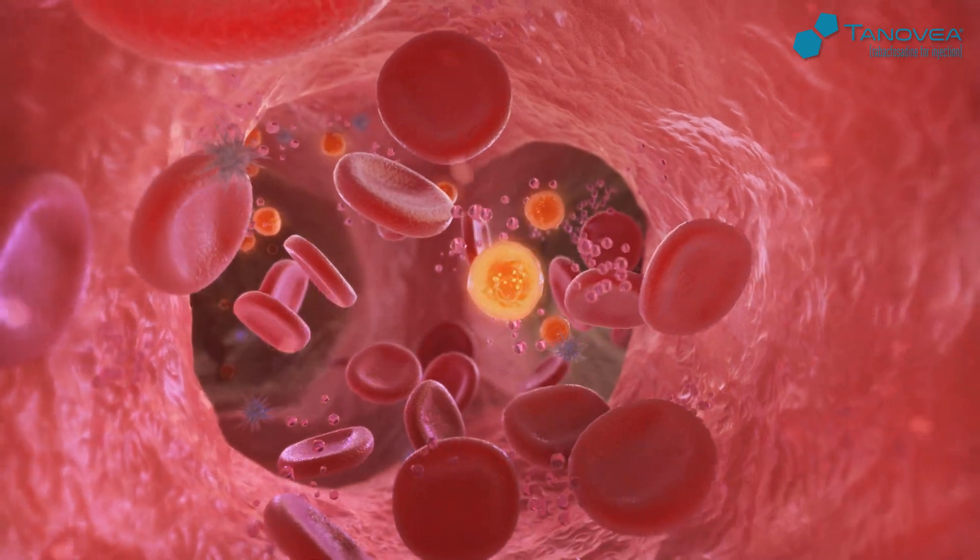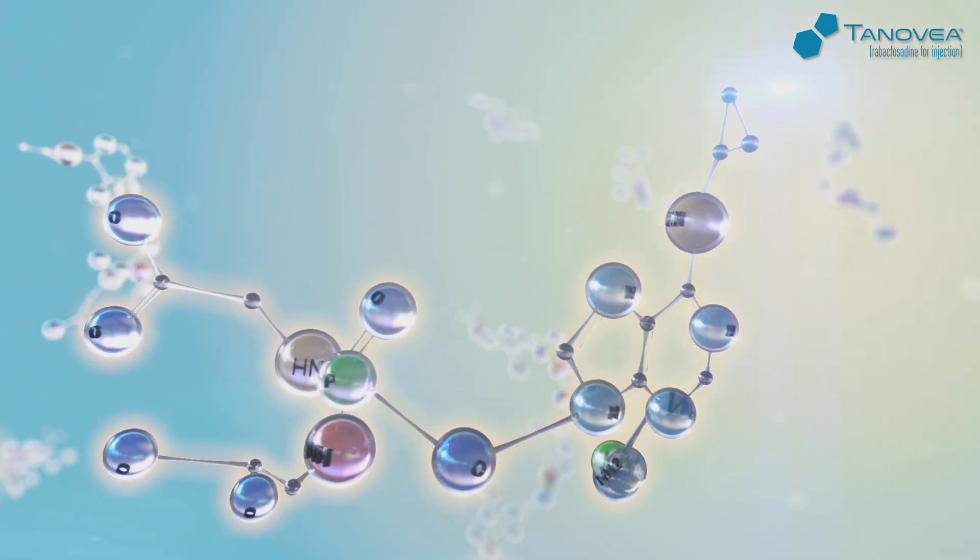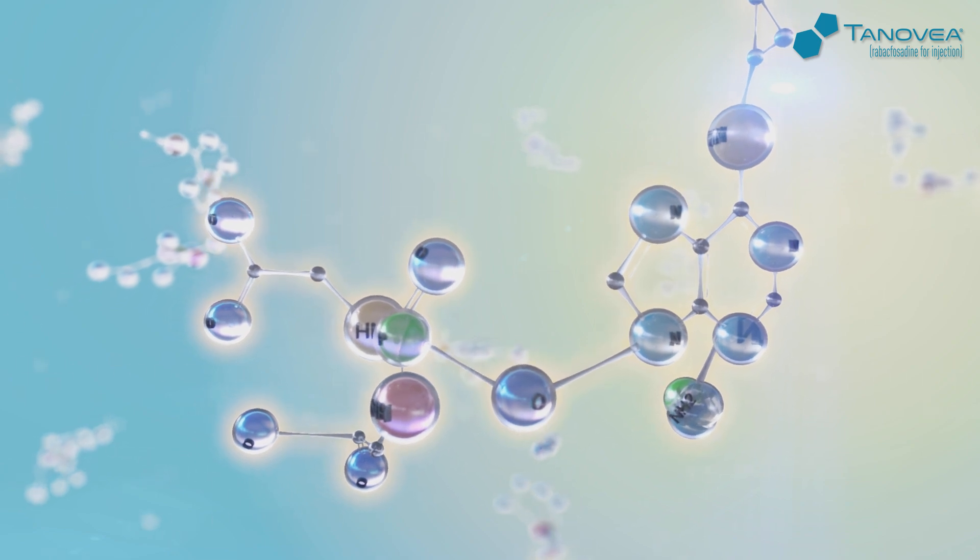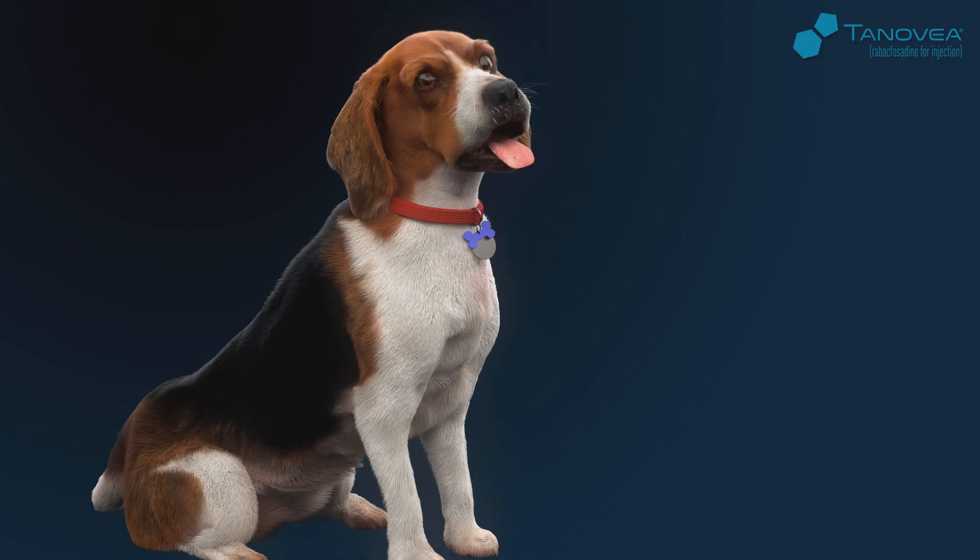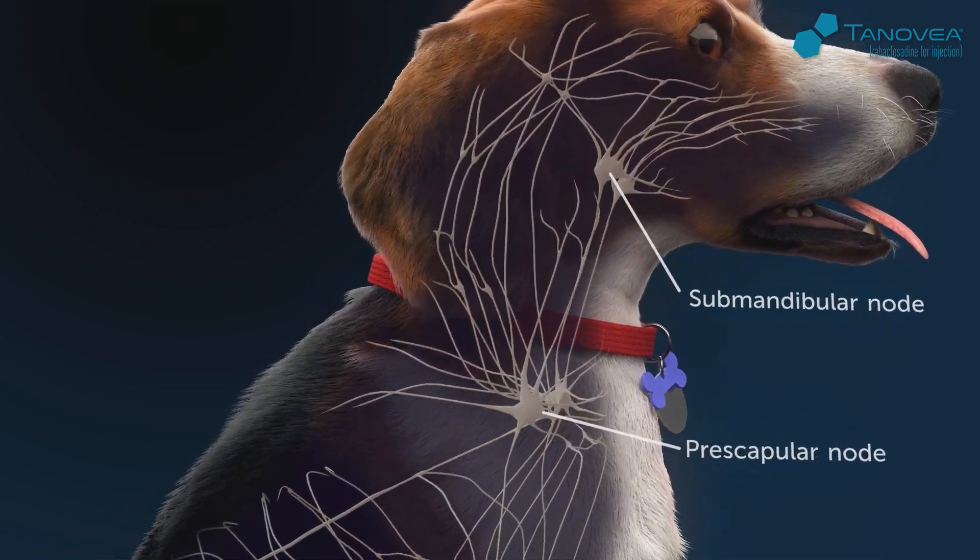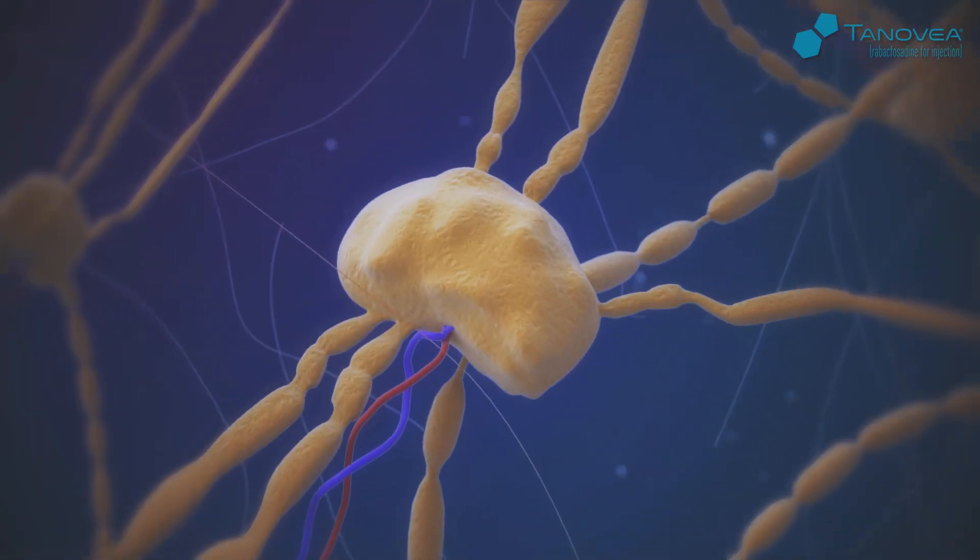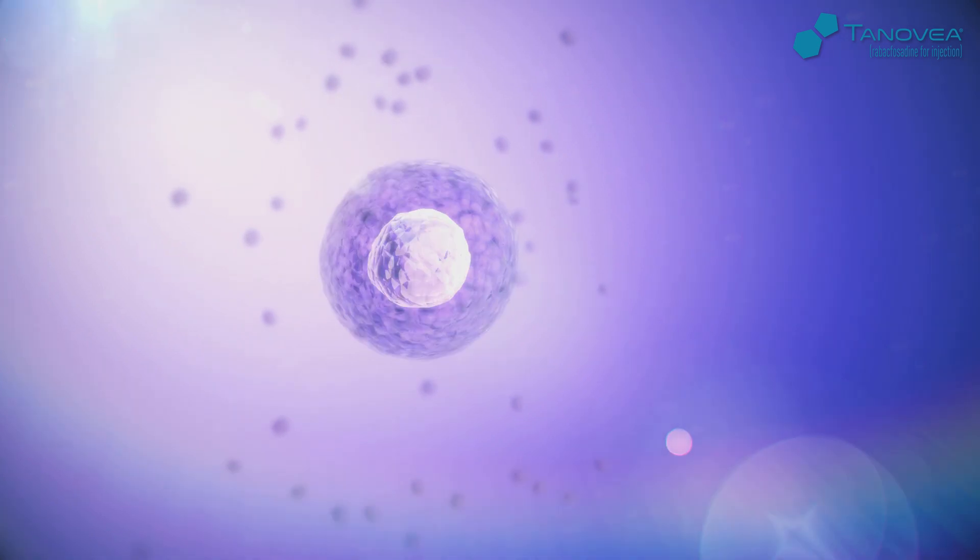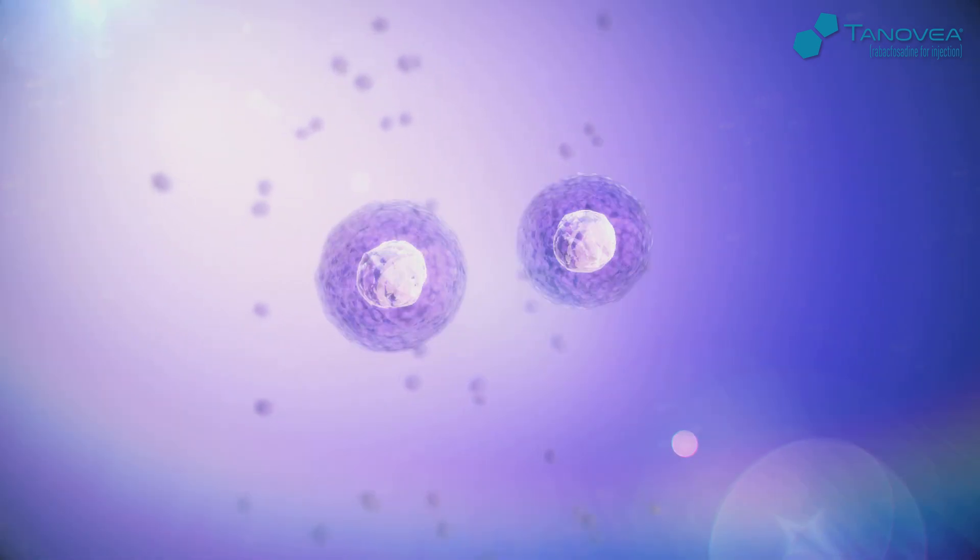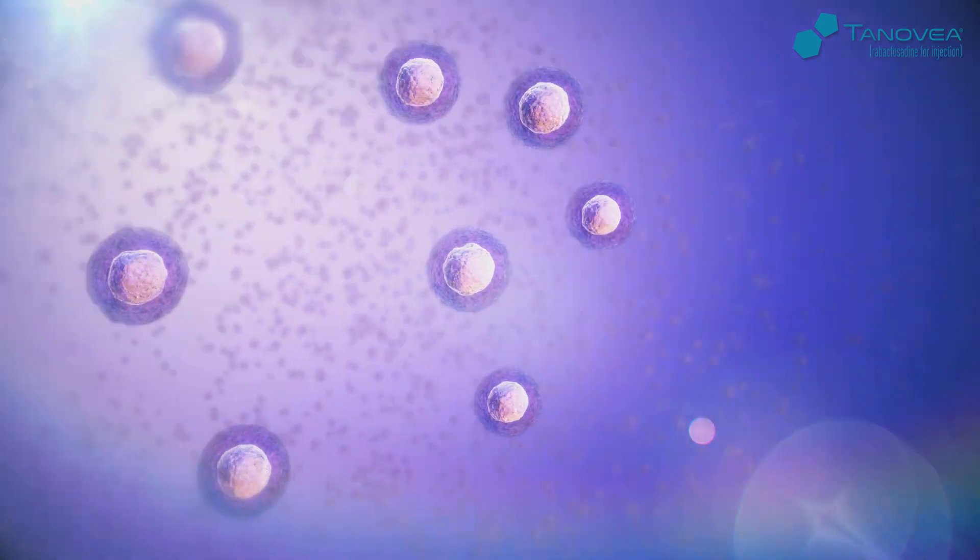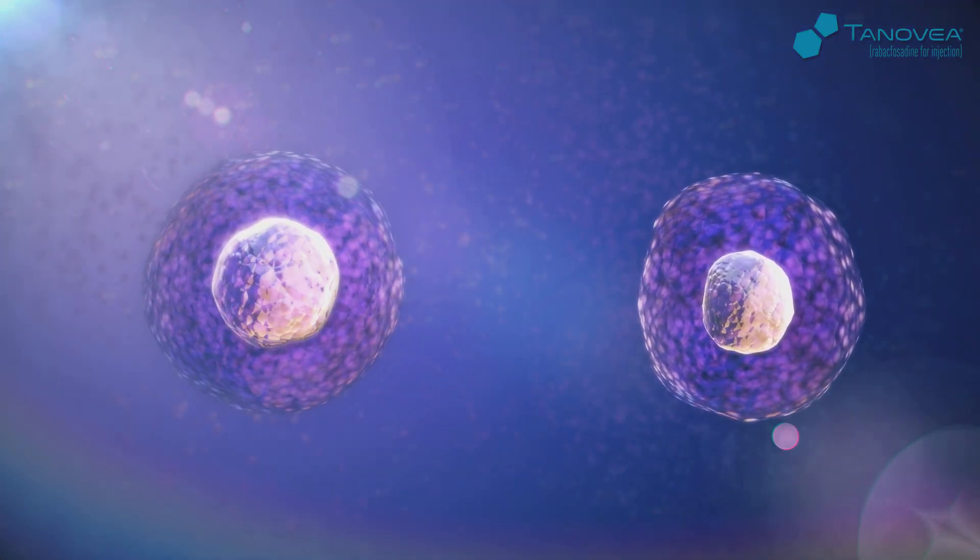Tanovia for injection is indicated for the treatment of lymphoma in dogs and is designed to target and kill lymphoma cells. It is a double prodrug of the nucleotide analog PMEG, a cytotoxic guanine analog. The double prodrug strategy allows less toxic prodrug to be administered and limits accumulation of cytotoxic PMEG to rapidly dividing cancerous lymphoid cells.